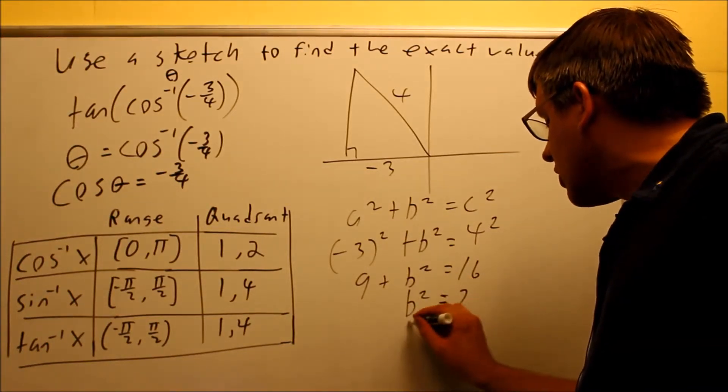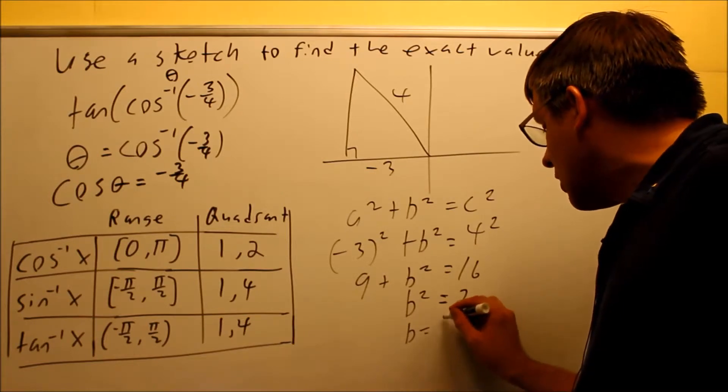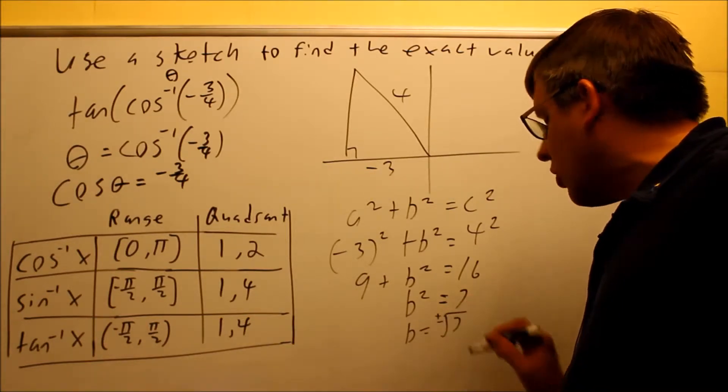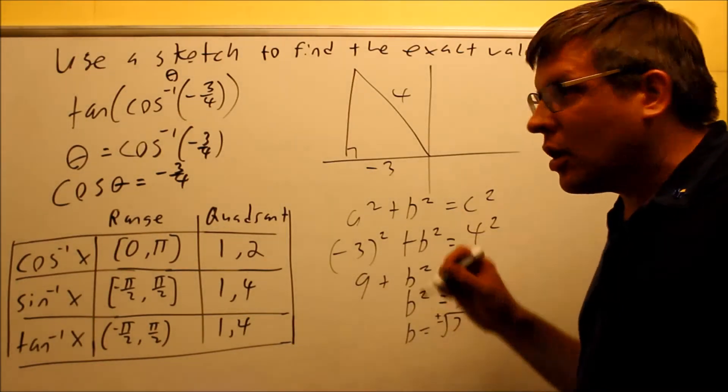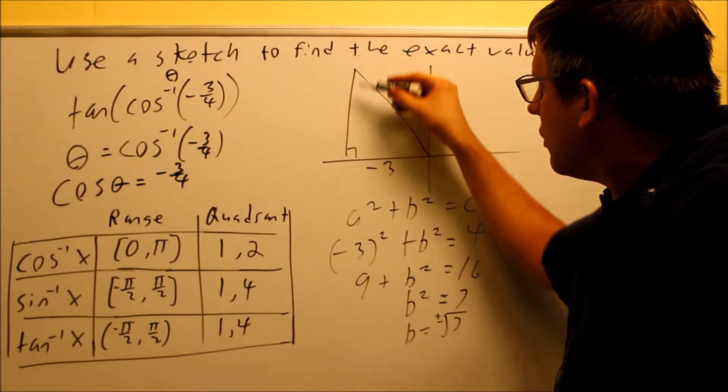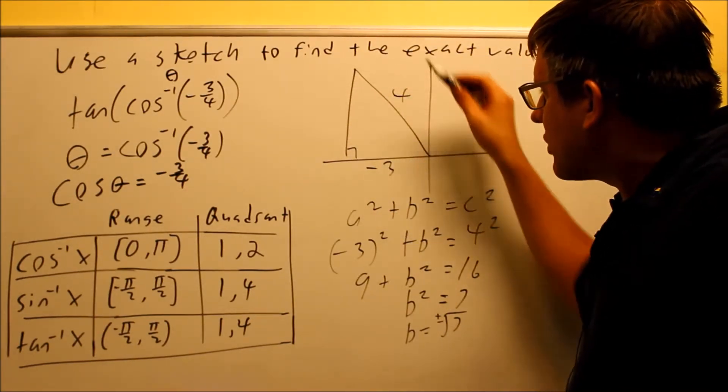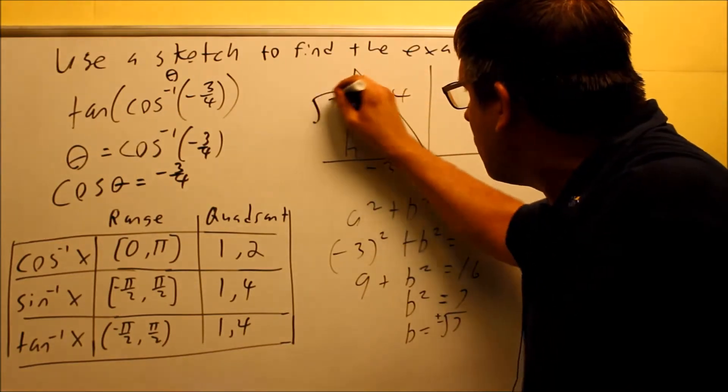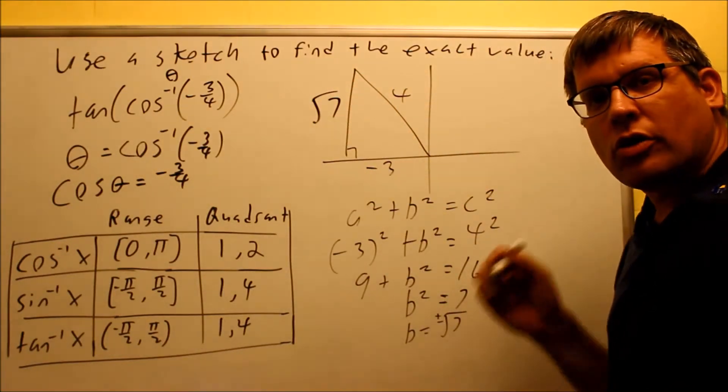And so if I take the square root of both sides, I get plus or minus root seven. And so I have a choice to make it positive or negative because this y right here is above the x-axis. That means that that would have to be a positive. So I'm going to get positive square root of seven.